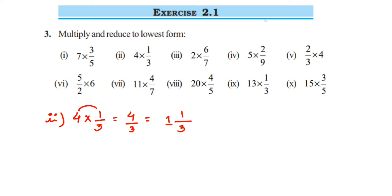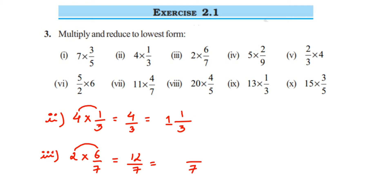Next we have 2 multiplied by 6/7. Here also we cannot cancel — we can't cancel 6 or 7, nor 2 or 7. So multiply the numerators: 2 × 6 = 12, giving 12/7. Convert to mixed fraction: 7 × 1 = 7; remainder is 12 − 7 = 5. So 5 will be the numerator, and the answer is 1 5/7.